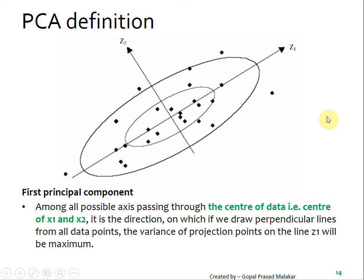In the last section, we talked about how among all possible lines passing through the center of the data, it is that particular axis which has maximum variance. When you put projections on that line from all data points, the projection points where the perpendiculars are cutting the line has maximum variance.